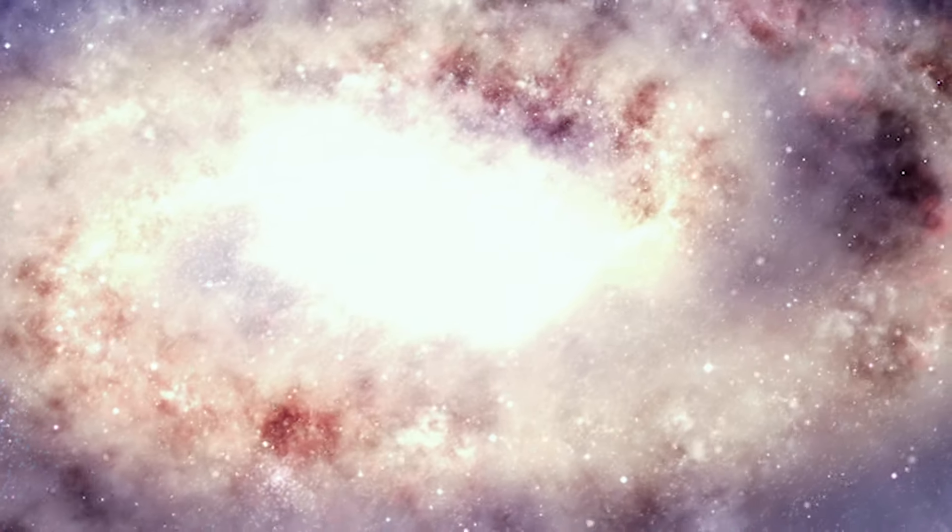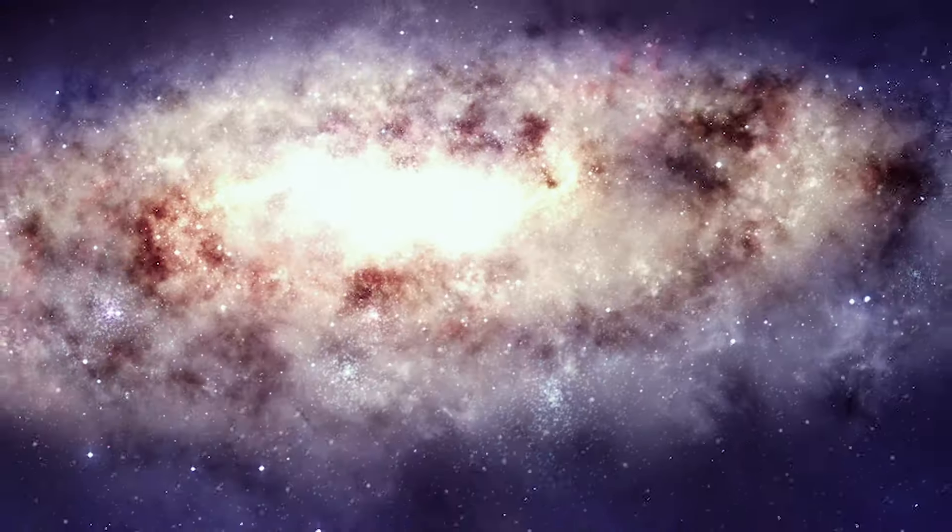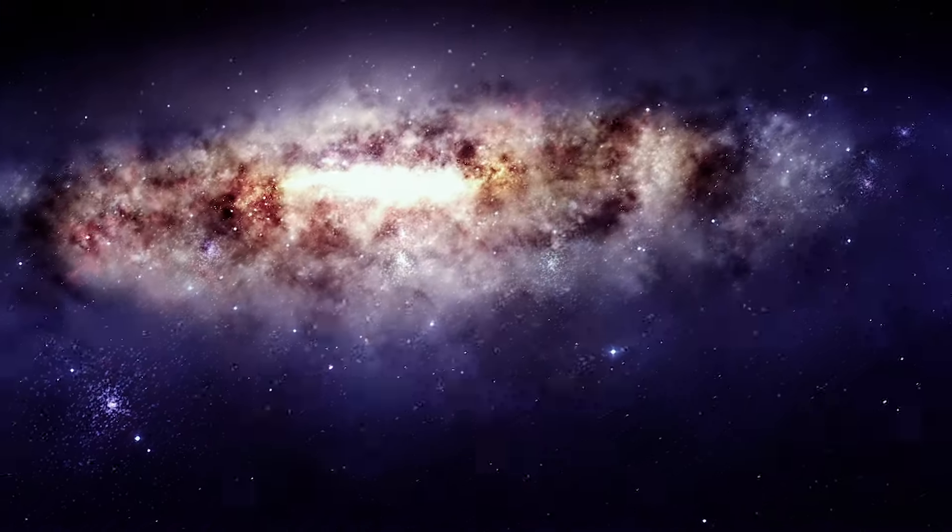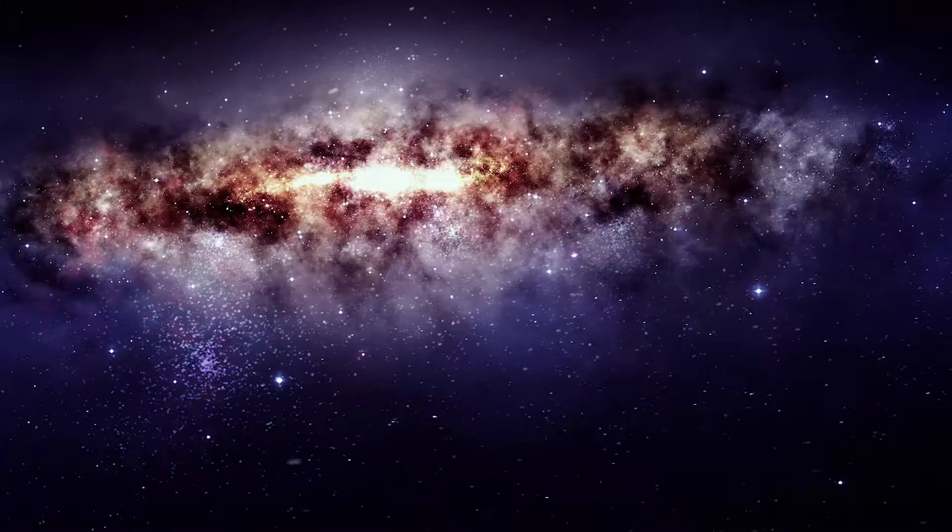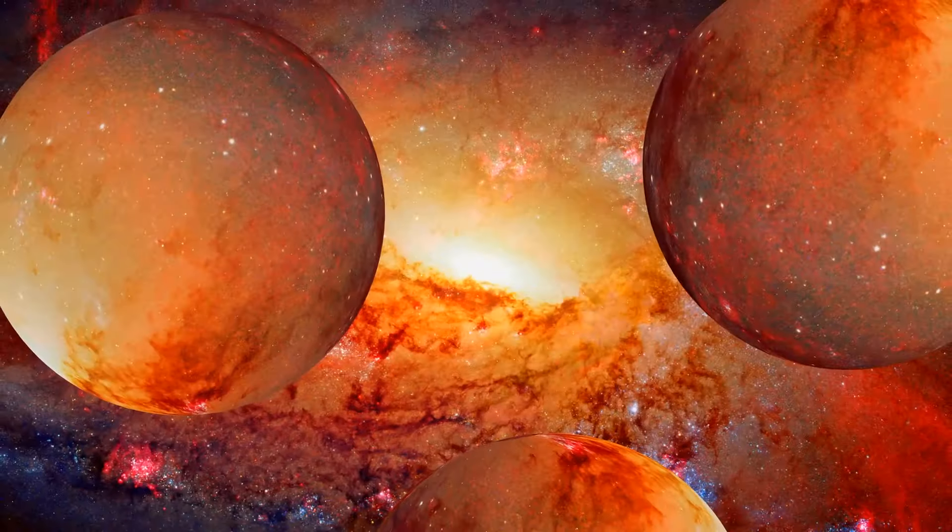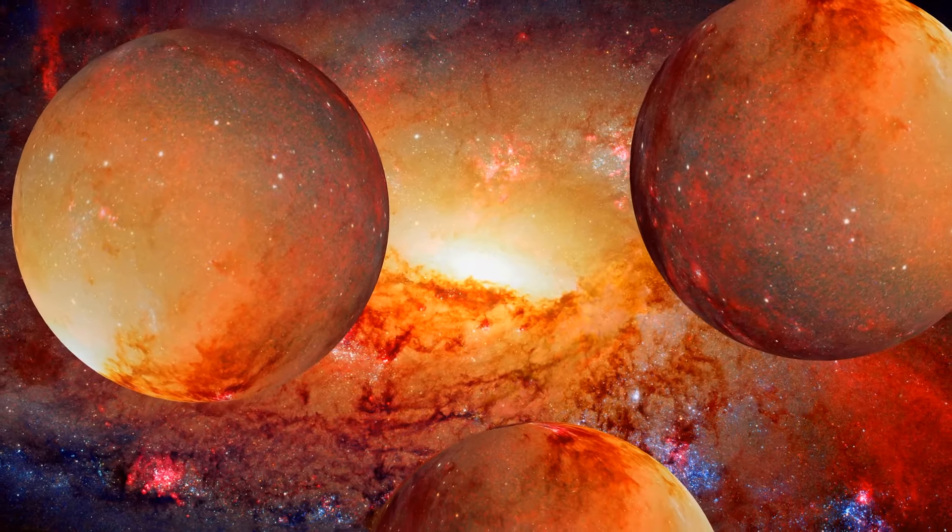During this phase, the protostar may be surrounded by a rotating disk of gas and dust, which provides material for accretion and may eventually give rise to a planetary system.